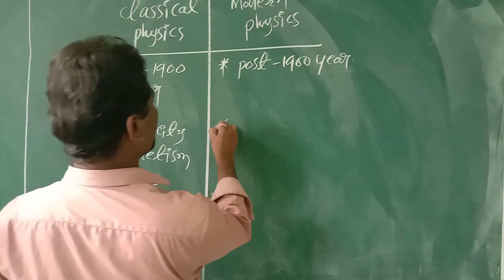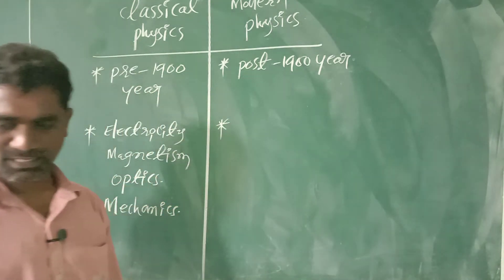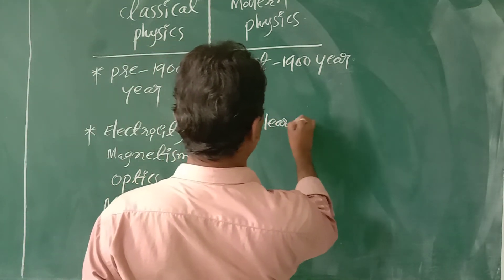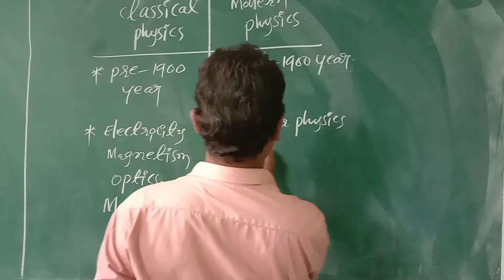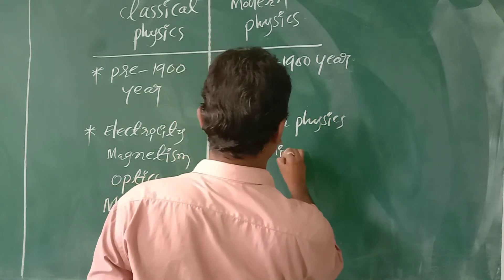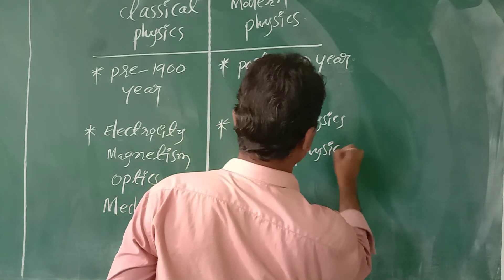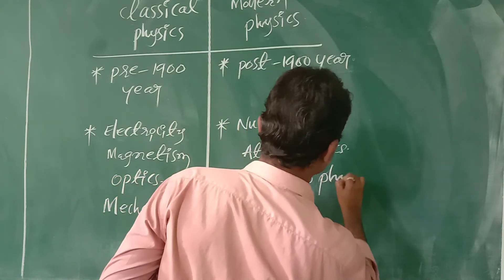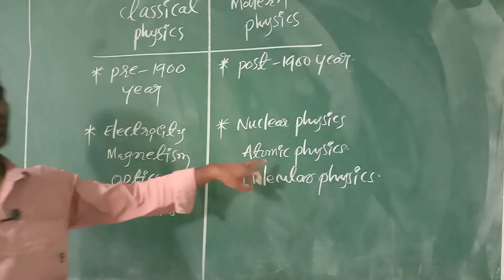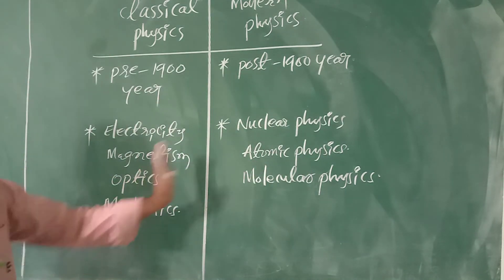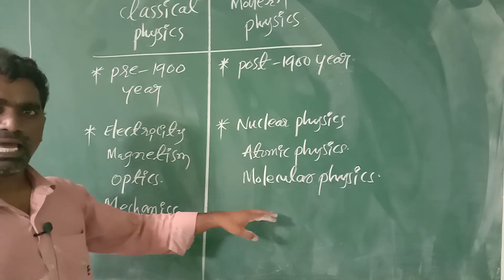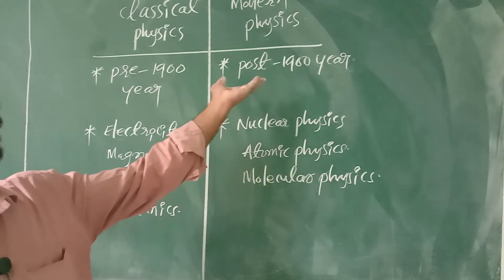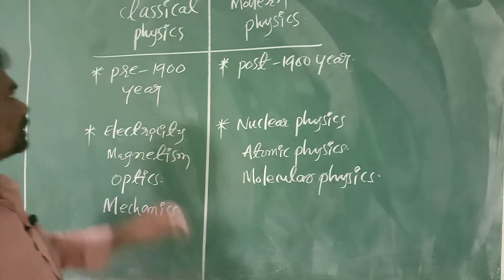Physics invented after 1900 is modern physics. Modern physics includes nuclear physics, atomic physics, and molecular physics. All these topics come under modern physics, and they were discovered after 1900 — around 1910, 1920, 1930, 1940, and 1950.